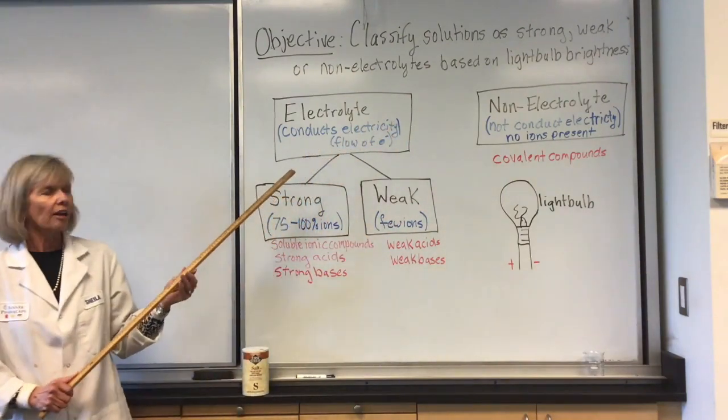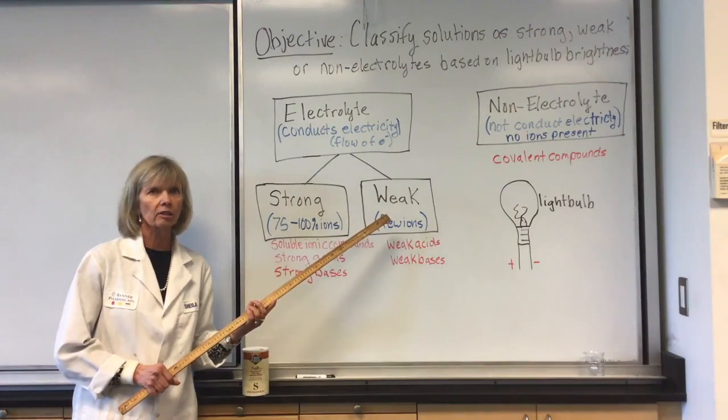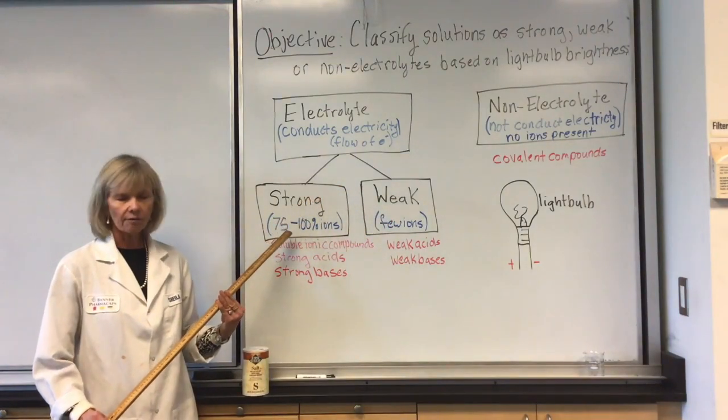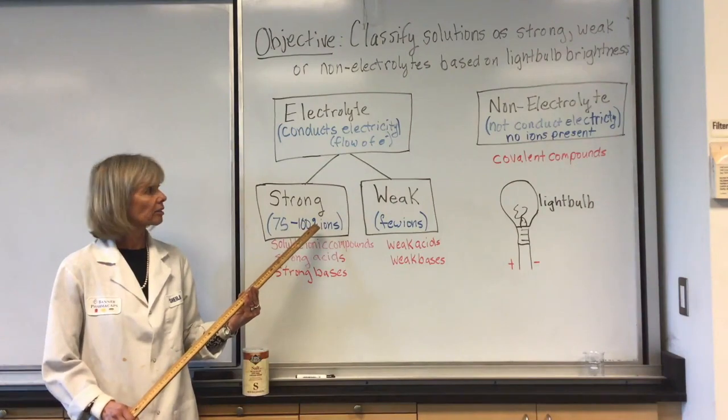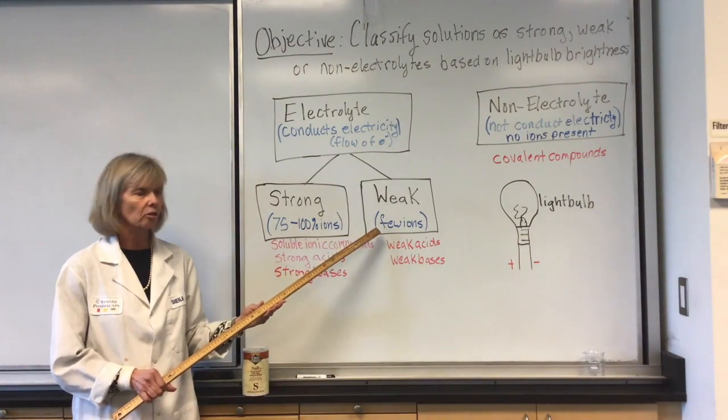Electrolytes can be classified further as strong or weak. A strong electrolyte means we have 75 to 100% ions. A weak electrolyte has very few ions present in its solution.